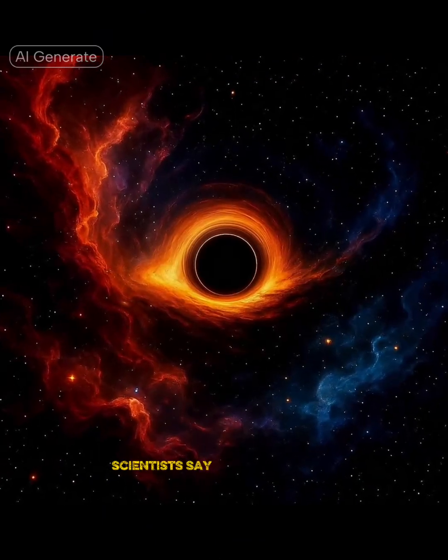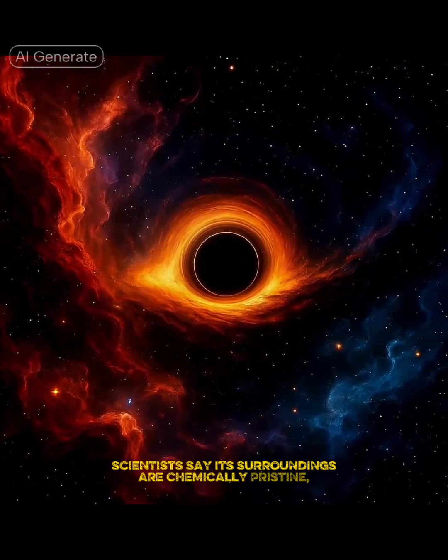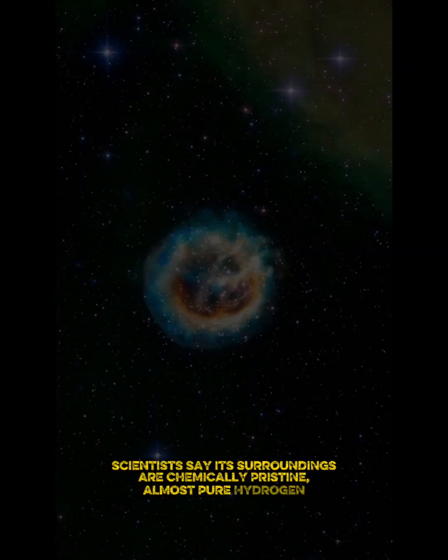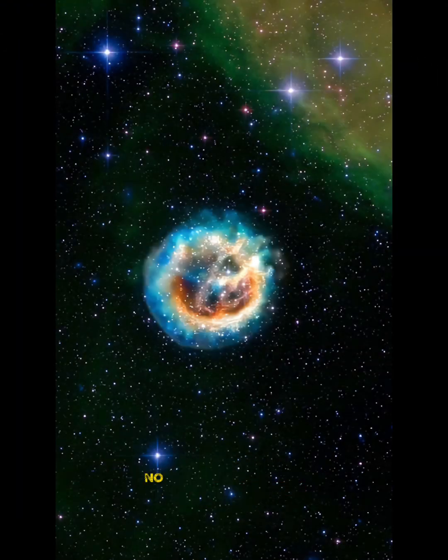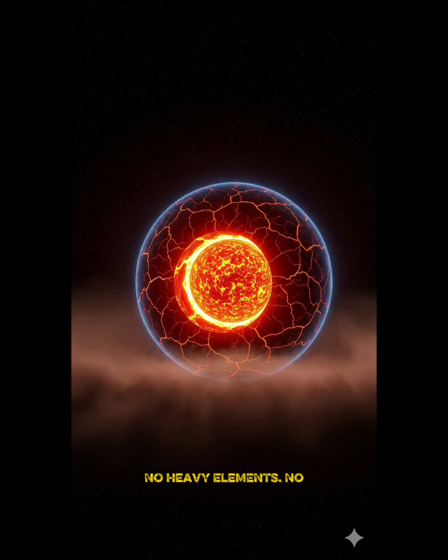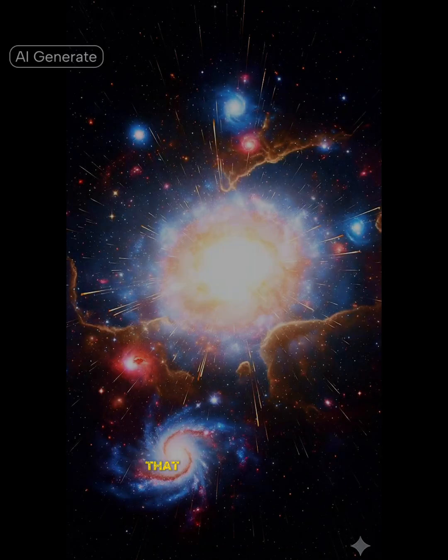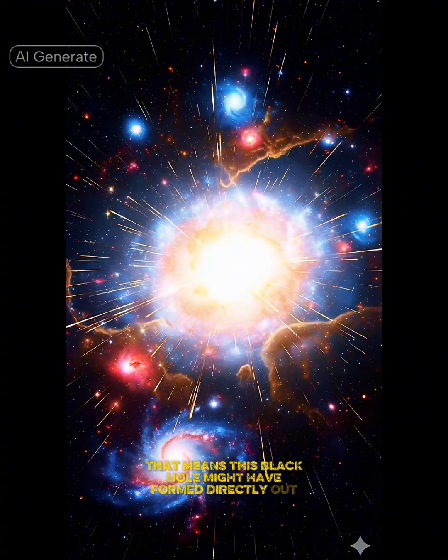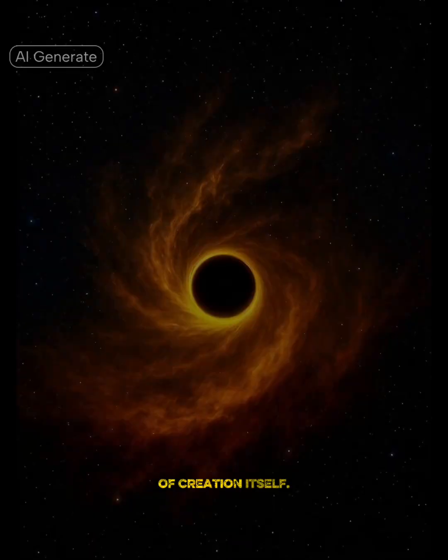Scientists say its surroundings are chemically pristine, almost pure hydrogen and helium. No heavy elements. No collapsing stars. That means this black hole might have formed directly out of the chaos of creation itself.